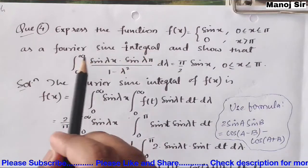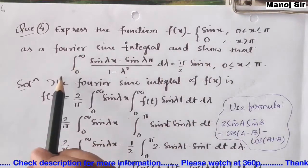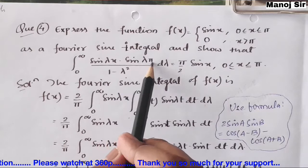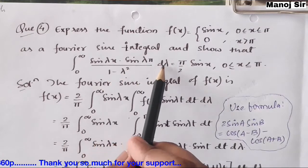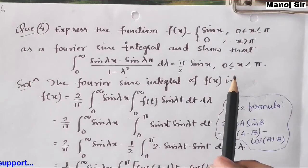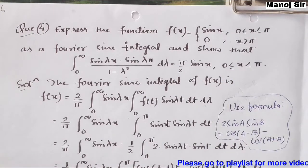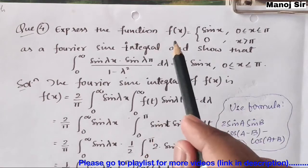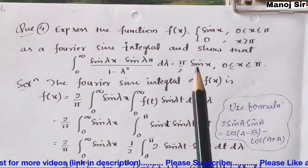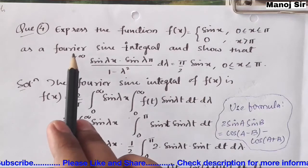We need to express this function as a Fourier sine integral, and after expressing it we also need to show that the integral from 0 to ∞ of sin(λx) · sin(λπ) / (1 - λ²) dλ equals (π/2) sin(x) when x ranges from 0 to π.